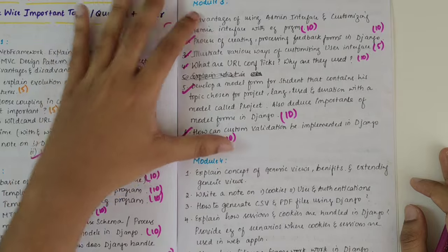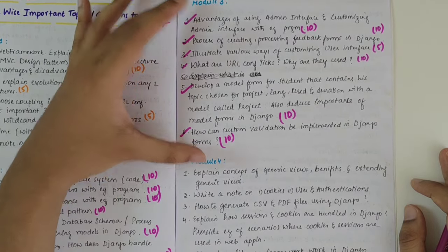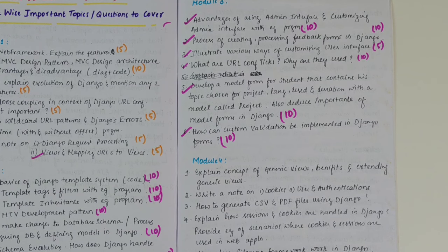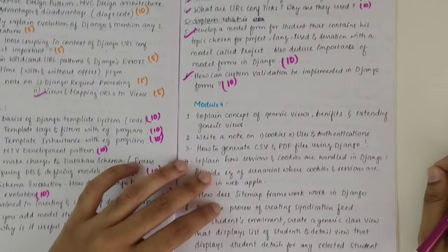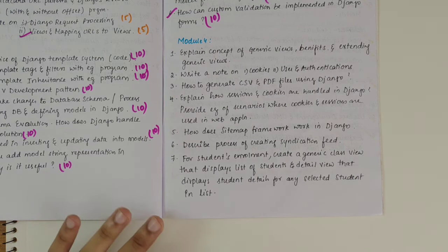So I would say that coming to the third module, there are only six questions. Make sure that you cover these six questions. You'll be thorough with the third module, complete third module. Moving on to the fourth module. I would say that compared to first, second and third module, fourth and fifth module are slightly difficult ones because they have certain complex topics.